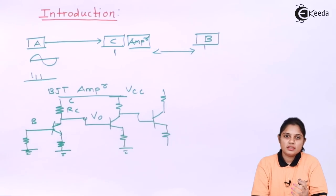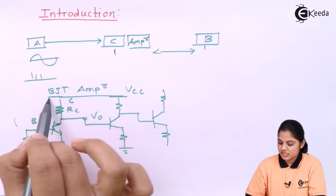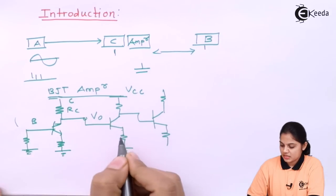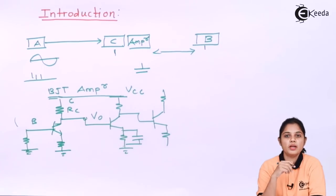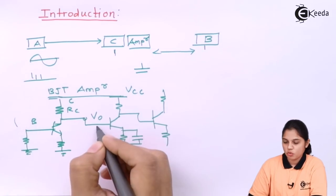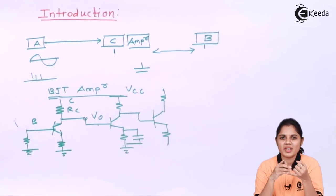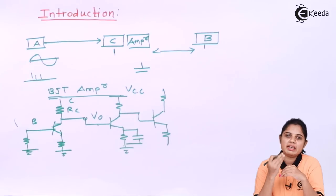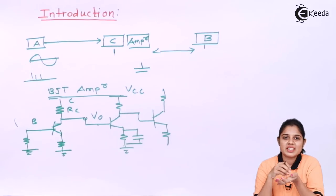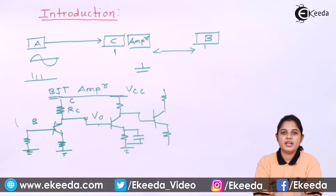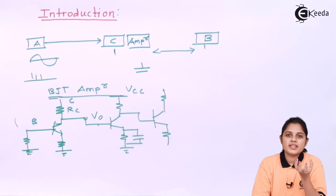However, when using discrete components like BJT or FET, you also need bypass capacitors, coupling capacitors, and bypass resistors. As you increase the amplification factor, the number of discrete components increases, which increases the size of the circuit. Due to this increase in size, the device becomes bulky — and that was the disadvantage of using discrete components.